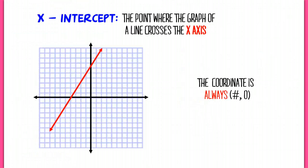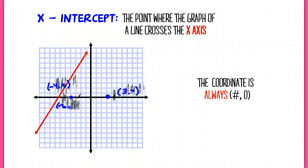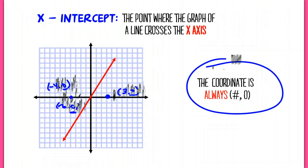The next thing we'll discuss are x- and y-intercepts. The x-intercept is where the line crosses the x-axis. It crosses at negative 4, 0 here. If I move the line to different positions, the x-intercept becomes 3, 0 or negative 6, 0. Notice that no matter where I move the line, the y-coordinate is always 0. So an x-intercept is always written as some number comma 0.